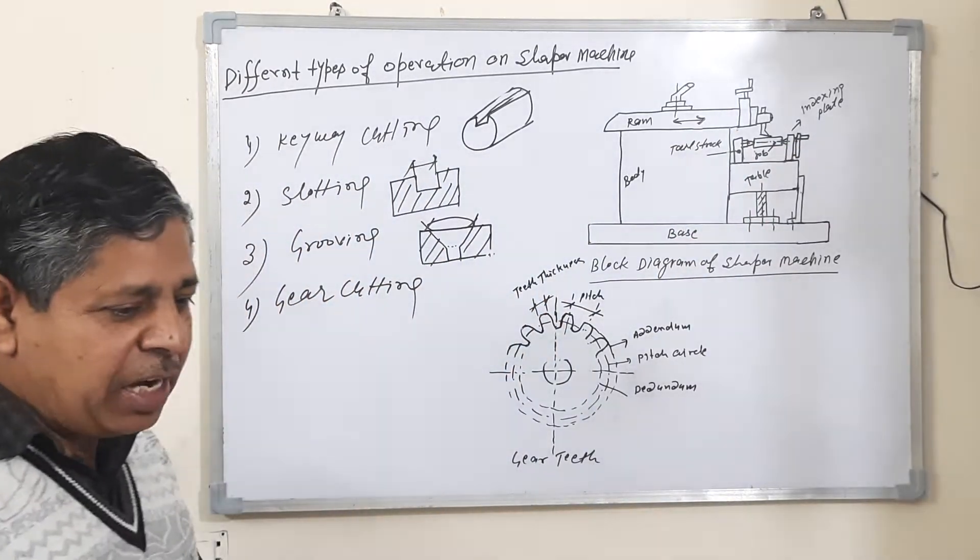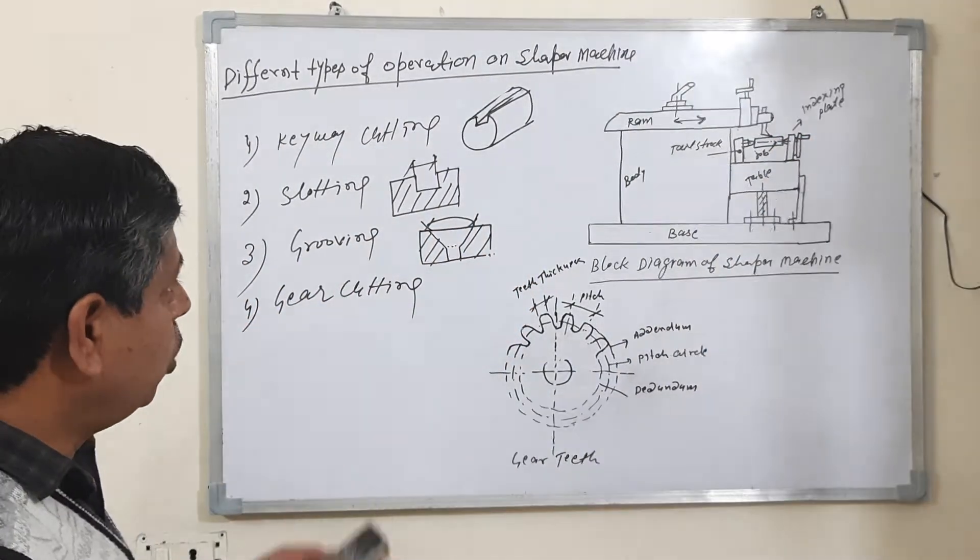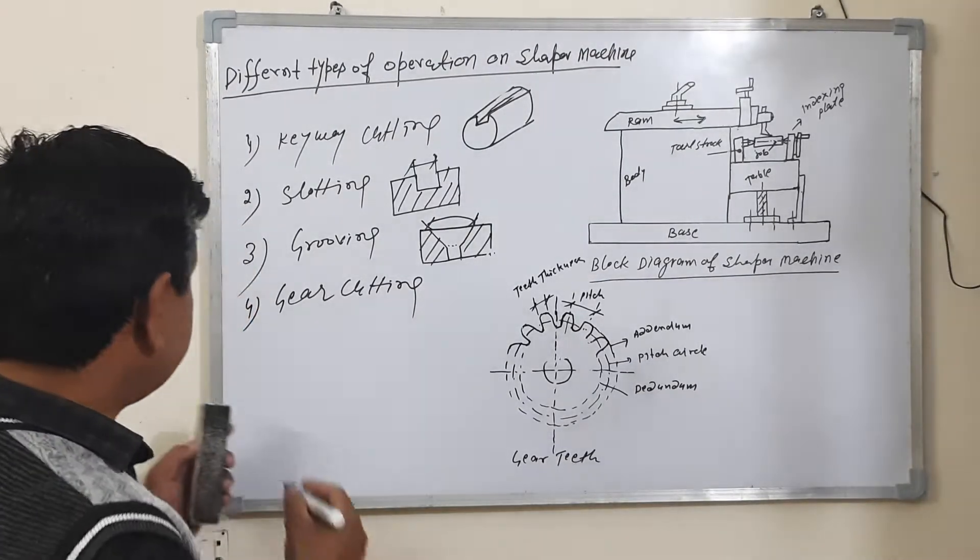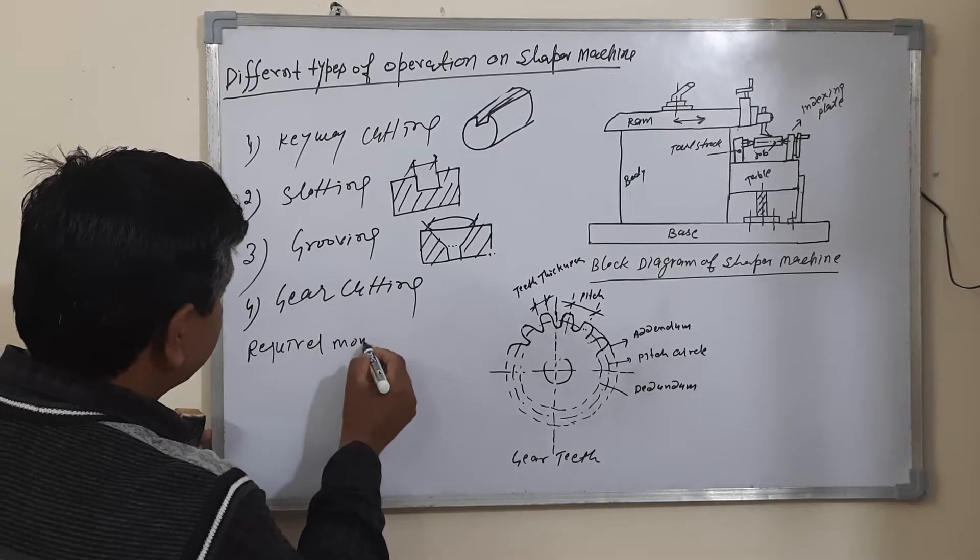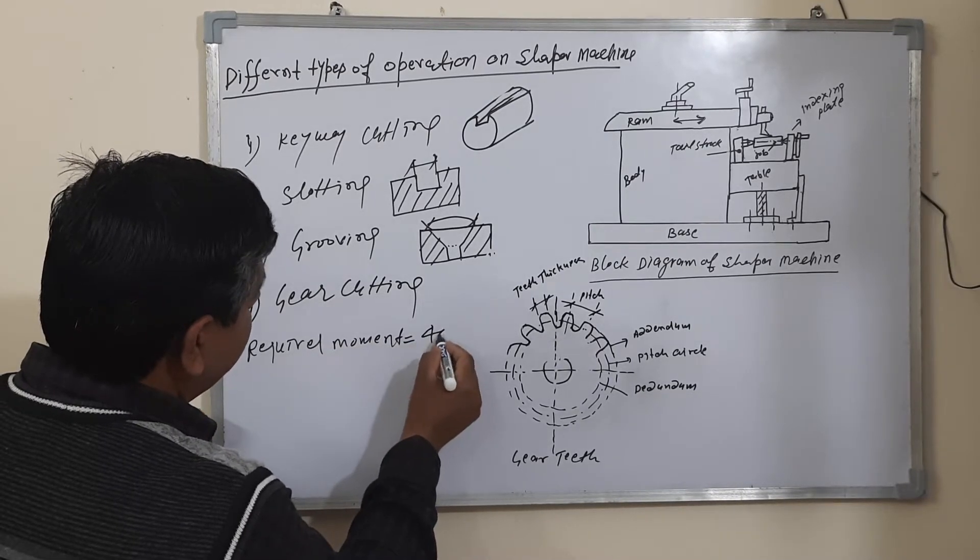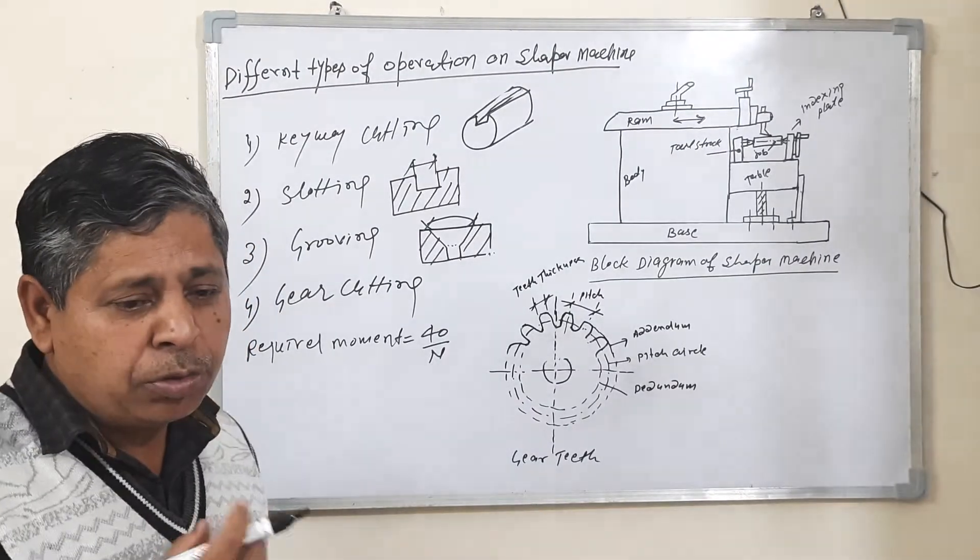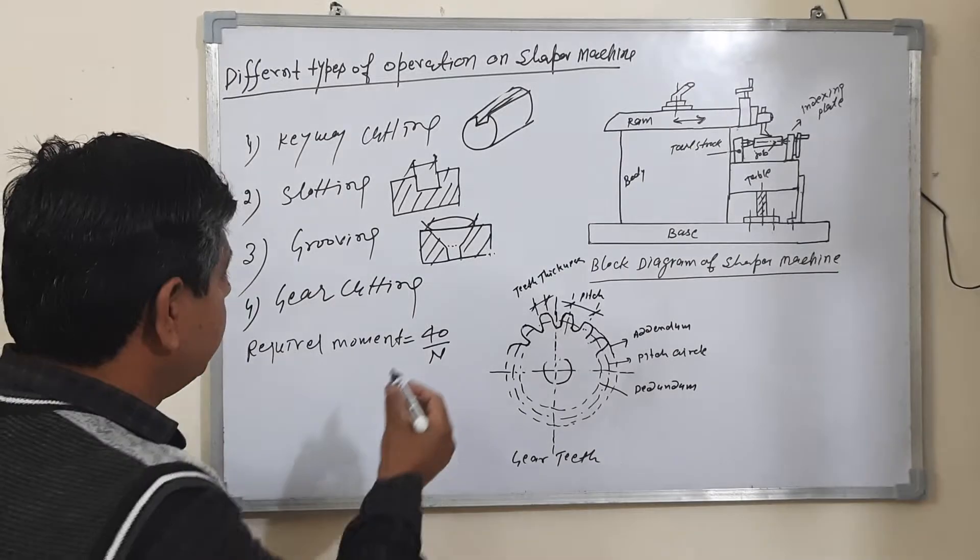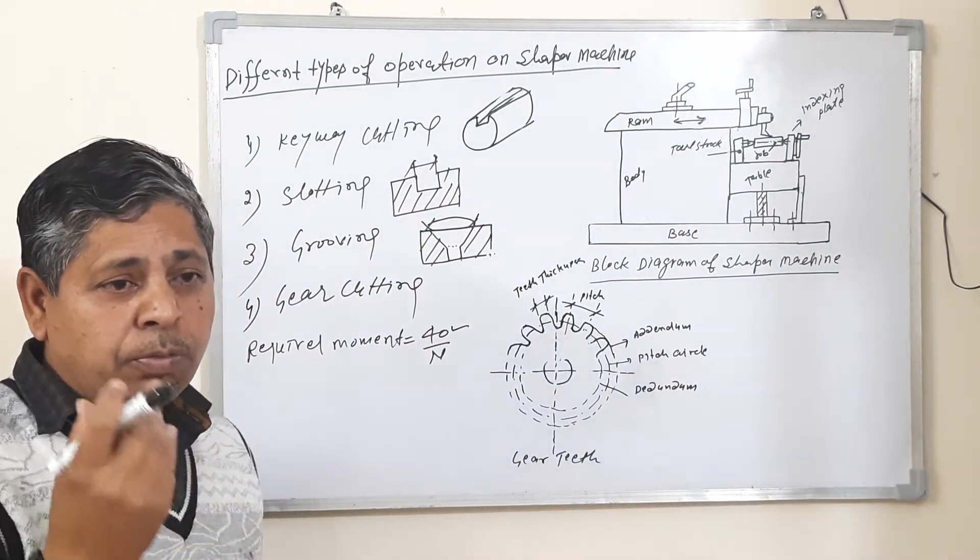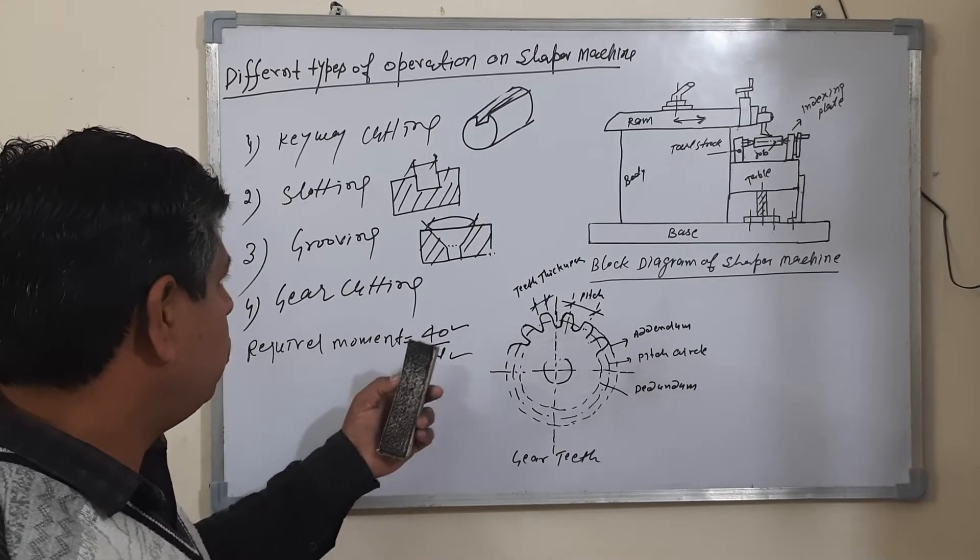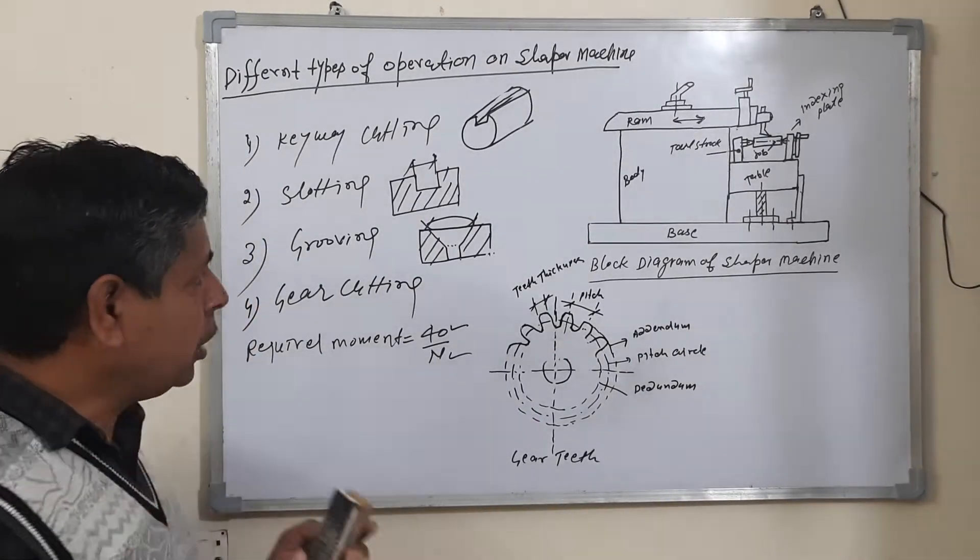How to divide the workpiece to cut the gear? To cut the gear, this formula is used: required movement is equal to 40 upon n. What is 40? 40 is the velocity ratio, and n is the number of teeth. How to use the indexing plate to cut the gear? How to select the indexing plate?